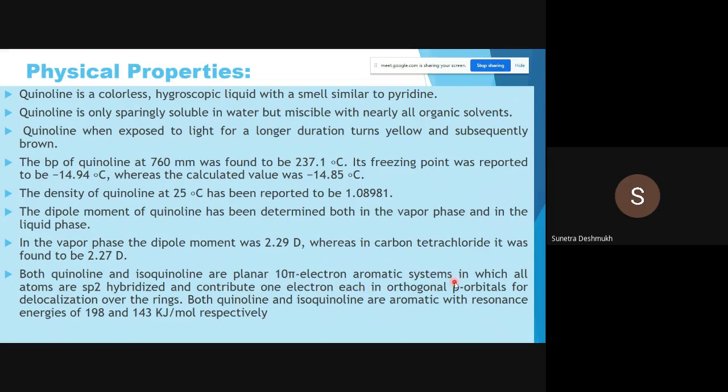Both quinoline and isoquinoline are planar 10 pi-electron aromatic systems in which all atoms are sp2 hybridized, including nitrogen, and contribute one electron each in orthogonal p-orbitals for delocalization over the rings. Quinoline is aromatic with resonance energy of 198 kilojoules per mole.